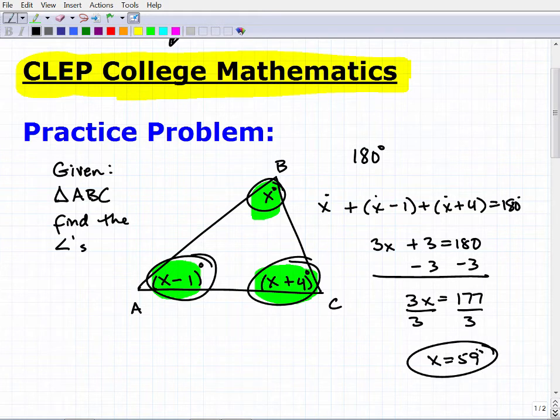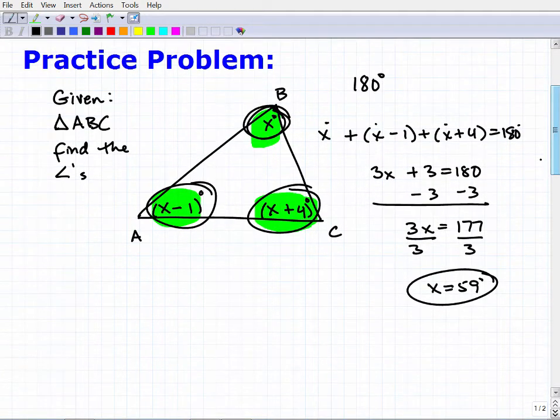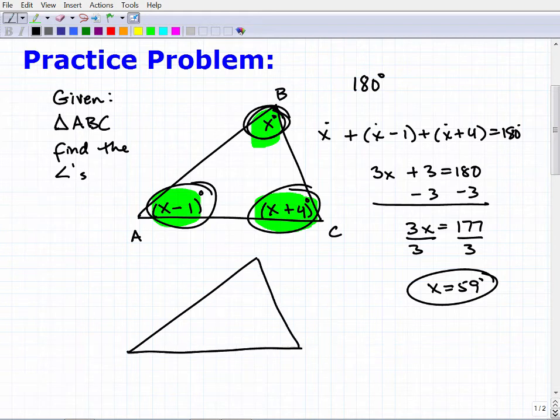So now we have to go in and finish answering this question, right? So this is X. So this is X is equal to 59. So let's kind of draw this triangle, sketch it over here real quick. So this is where X was up here. So this is 59 degrees. Okay. This angle down here is X minus one, right? So this is what 59 minus one. So this is 58 degrees.